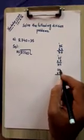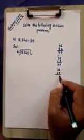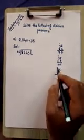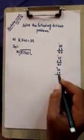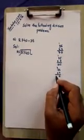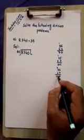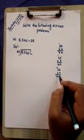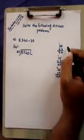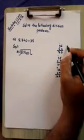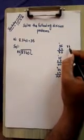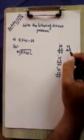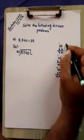Now 35 multiplied by four: four fives are twenty, write zero carry two; four threes are twelve plus two is fourteen. So 35 × 4 = 140. Now table of 35 five times: five fives are twenty-five, write five carry two.